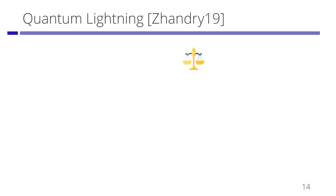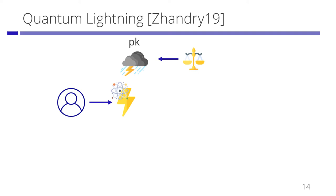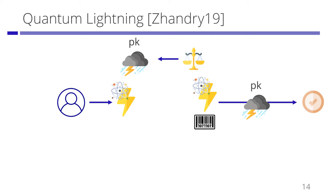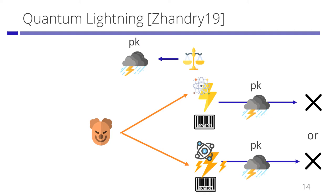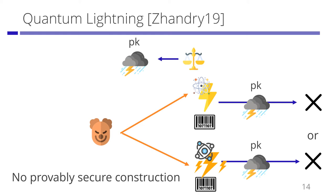First, we review the notion of quantum lightning. An authority generates a public key called a bolt generator. Anyone who has the public key can generate a quantum state called a bolt. We can verify a quantum state is a valid bolt for a serial number by using the public key. The adversary tries to make a copy of a bolt — that is, the adversary generates a potentially entangled two quantum states. The unclonability of quantum lightning guarantees one of the two quantum states with the same serial number is invalid. Quantum lightning is a stronger primitive than public key quantum money, and there is no provably secure construction so far.